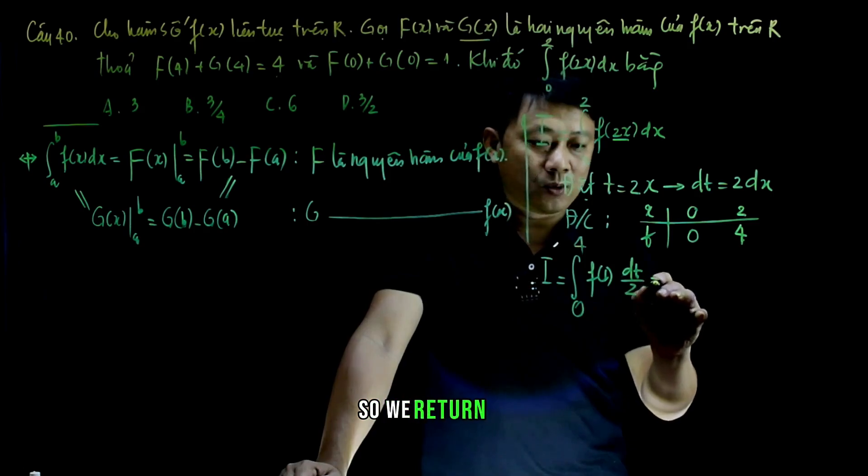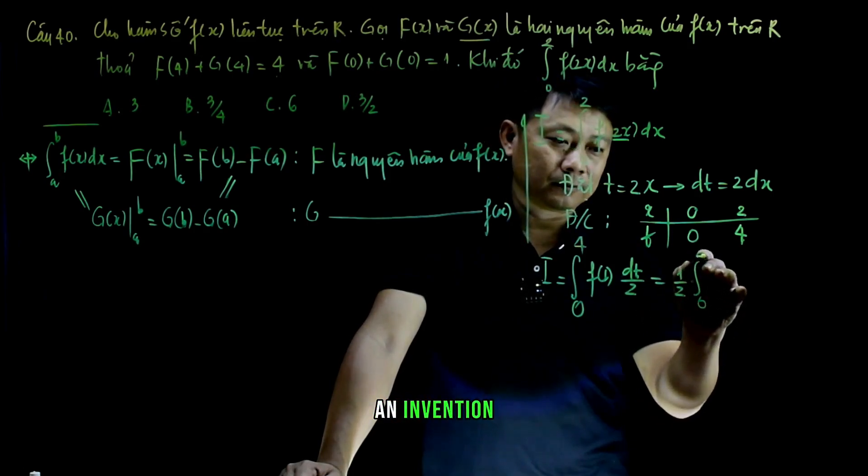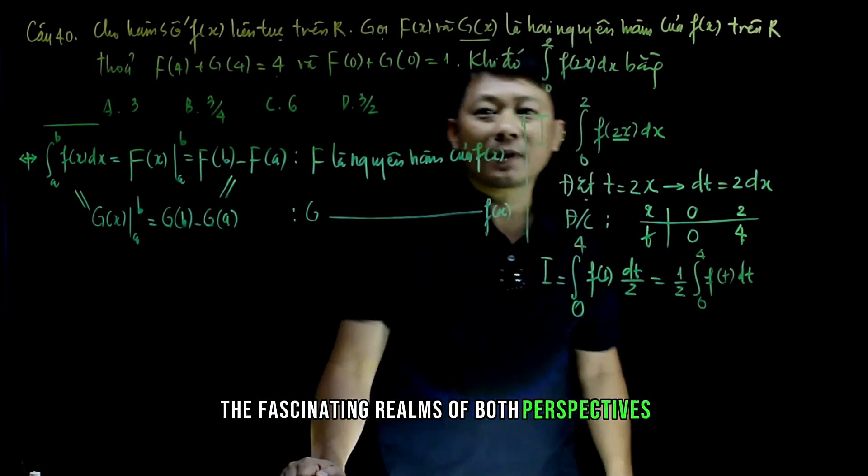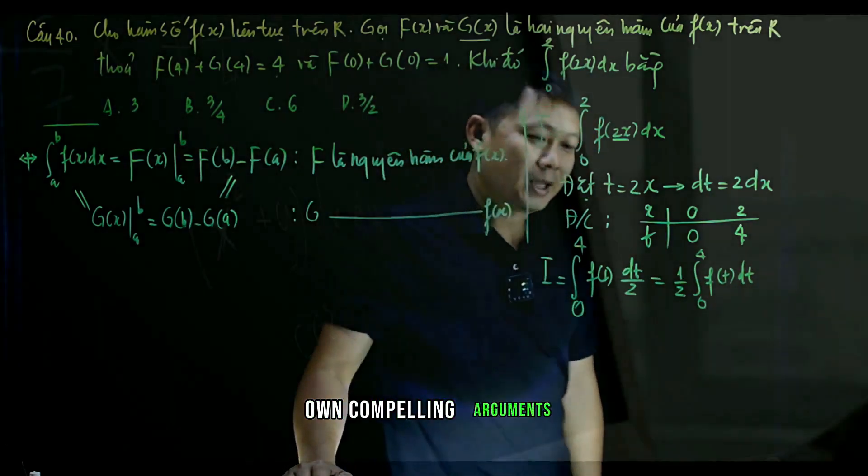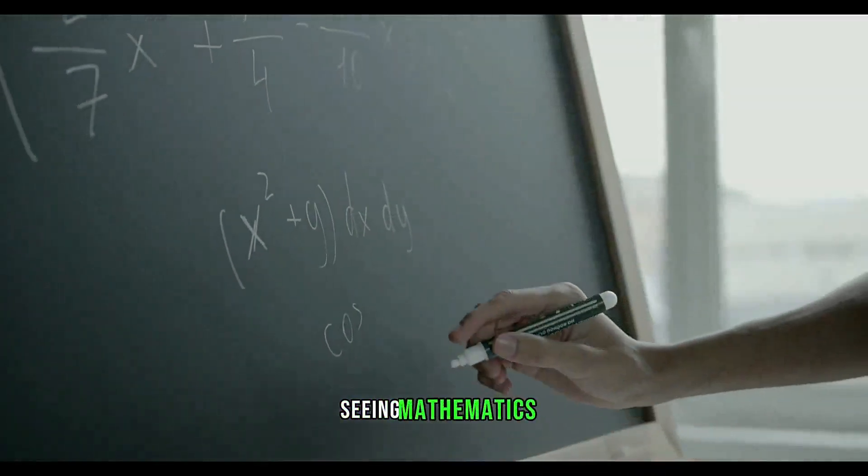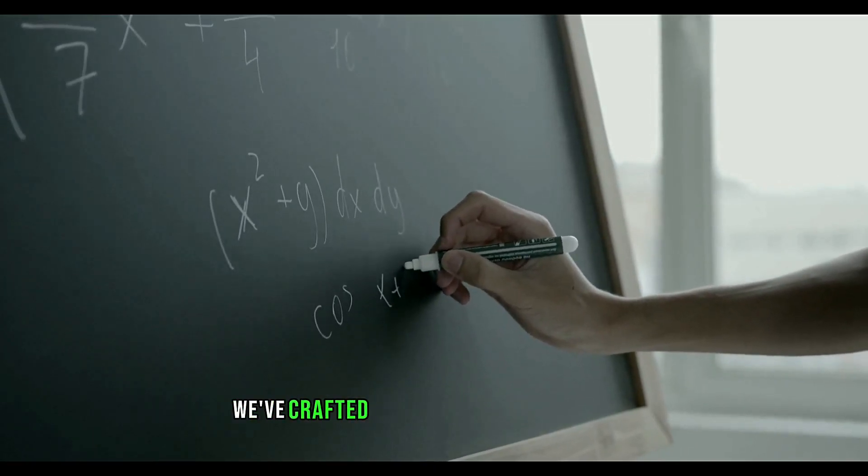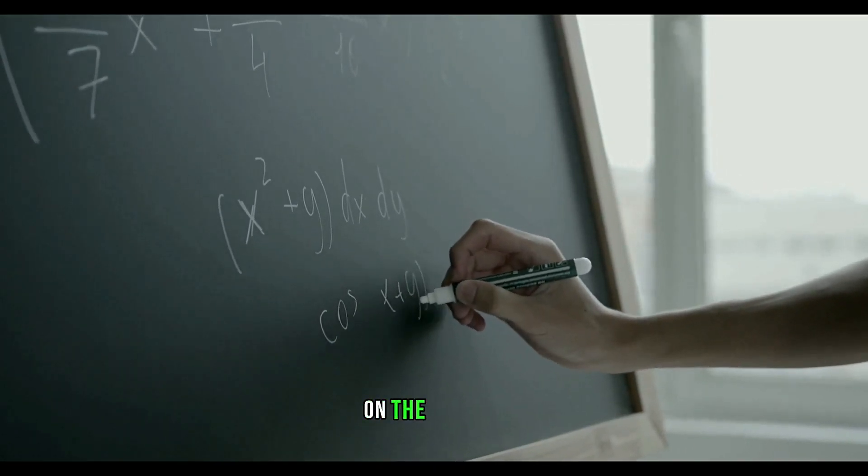So, we return to our initial question: is mathematics an invention or a discovery? We've journeyed through the fascinating realms of both perspectives, each with its own compelling arguments. On one hand, seeing mathematics as an invention implies that it's a human creation, an ingenious tool we've crafted to make sense of our world. On the flip side, considering it a discovery suggests that it's an inherent part of the universe waiting to be uncovered and understood.